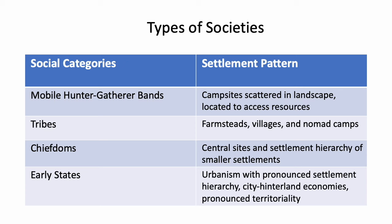For example, for mobile hunter-gatherer bands, we would expect to find campsites scattered through the landscape, and we might expect at least some of those campsites to have something to do with resource extraction. For tribal societies, we might expect to see farmsteads, villages, and nomad camps. While chiefdoms might have central sites with a settlement hierarchy of smaller settlements subservient to that center. And early states usually have urbanism with pronounced settlement hierarchy, city hinterland economies, and pronounced territoriality.